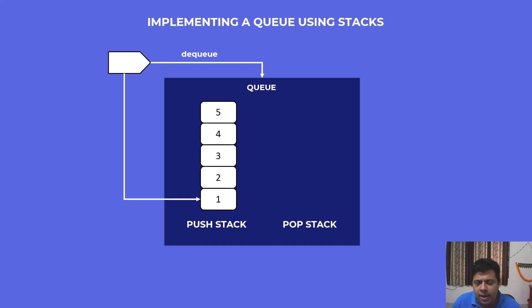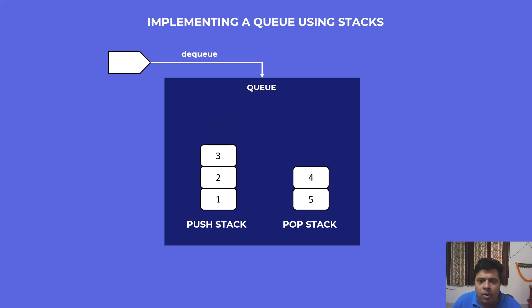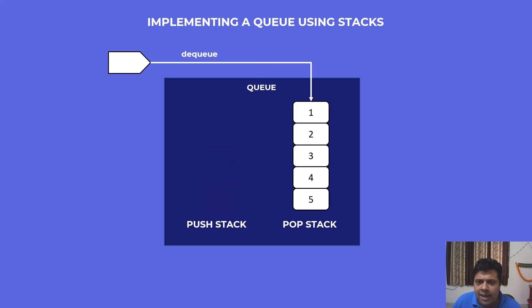Here we can use the pop stack — the second stack in our queue implementation. What we can do is move all of these elements to the pop stack: we pop elements from the push stack and push them onto the pop stack. We move element 5, then 4, then 3, then 2, and lastly element 1 — which we can now very easily dequeue from the pop stack and return to the consumer. The rest of the elements in the pop stack are now in the correct order — the order in which they were inserted: 2, 3, 4, and 5 — so any subsequent dequeue requests simply pop the topmost element from the pop stack.